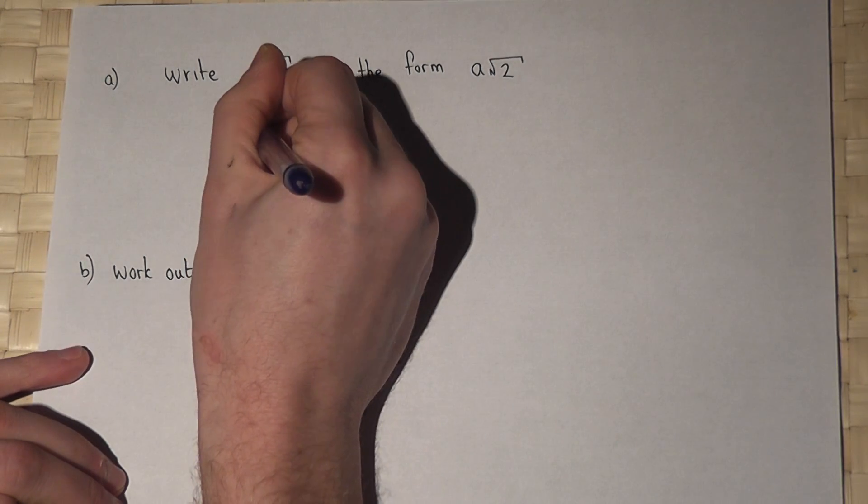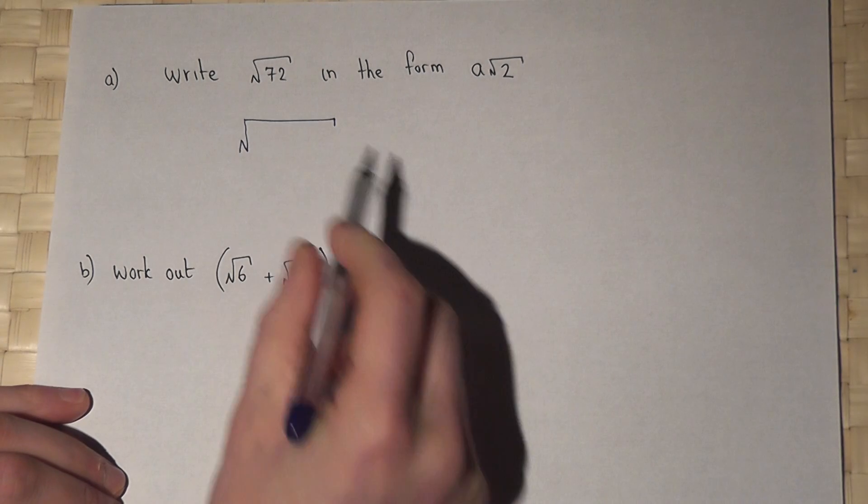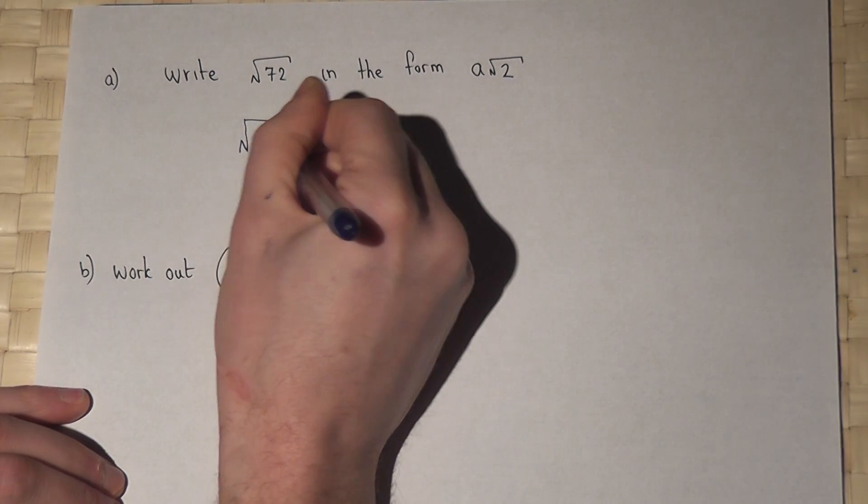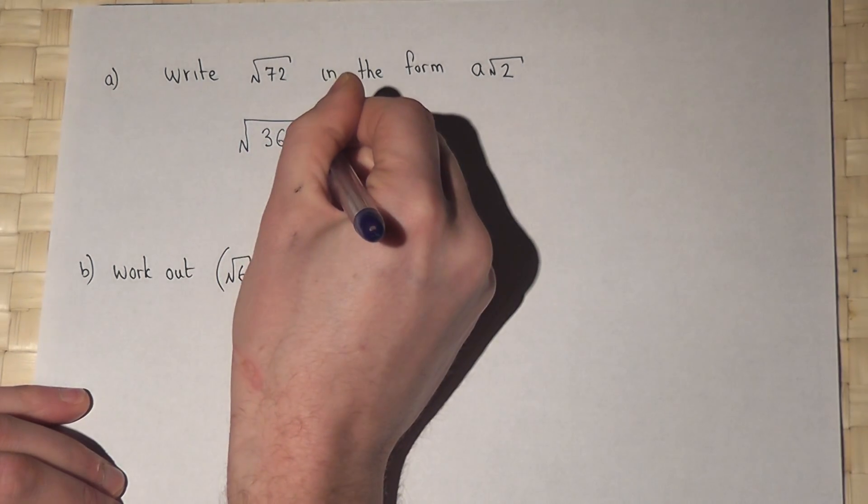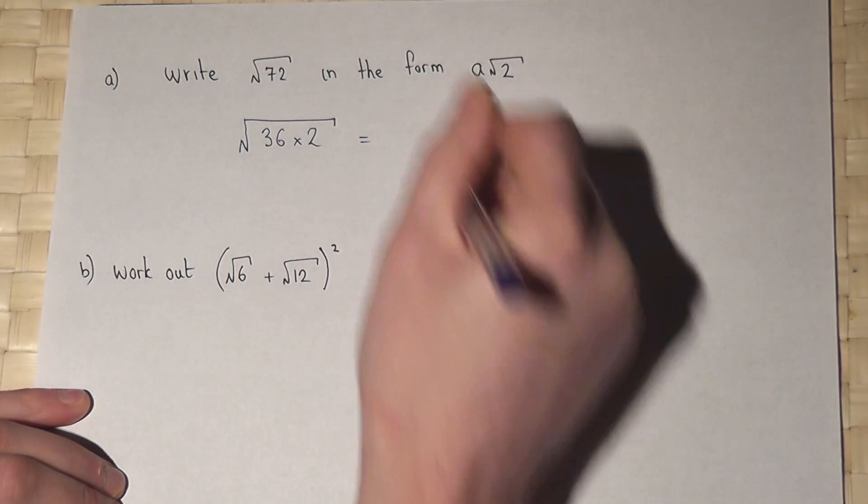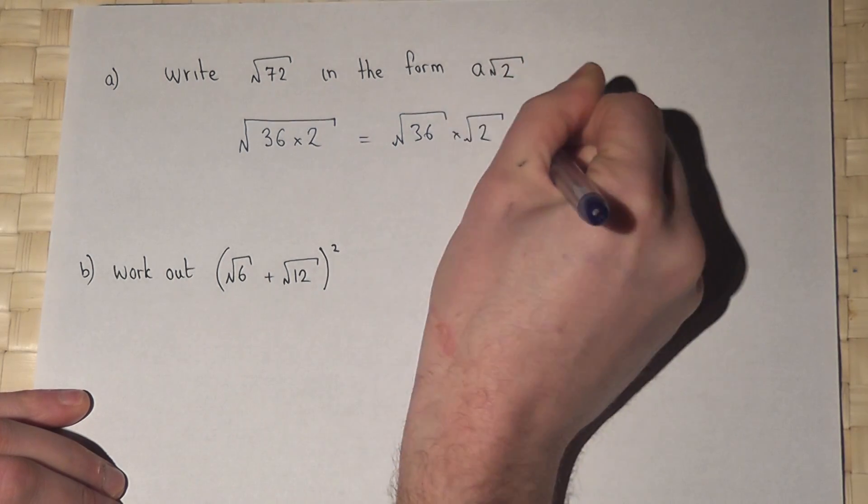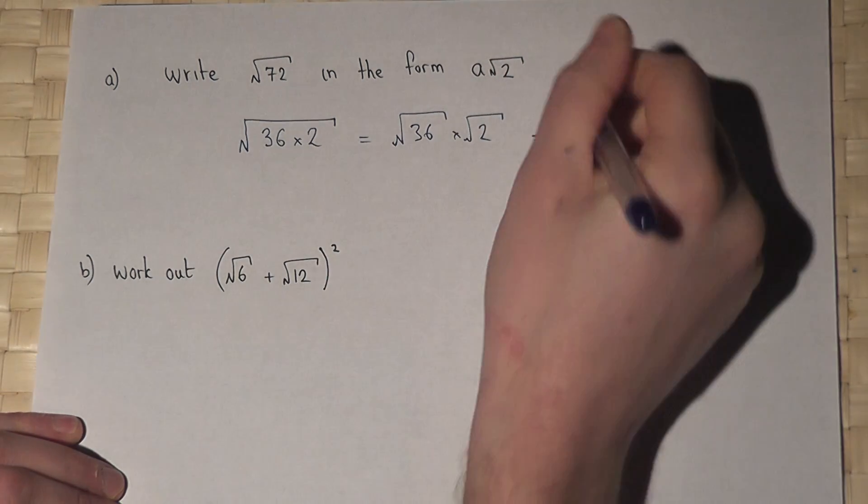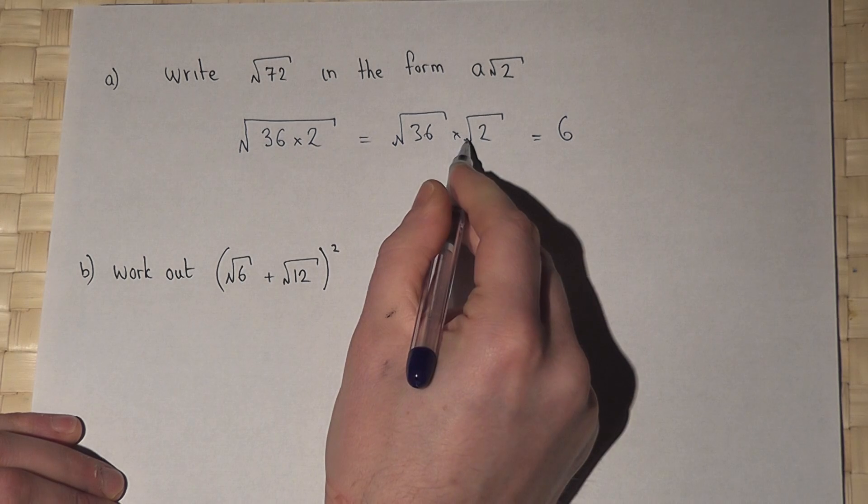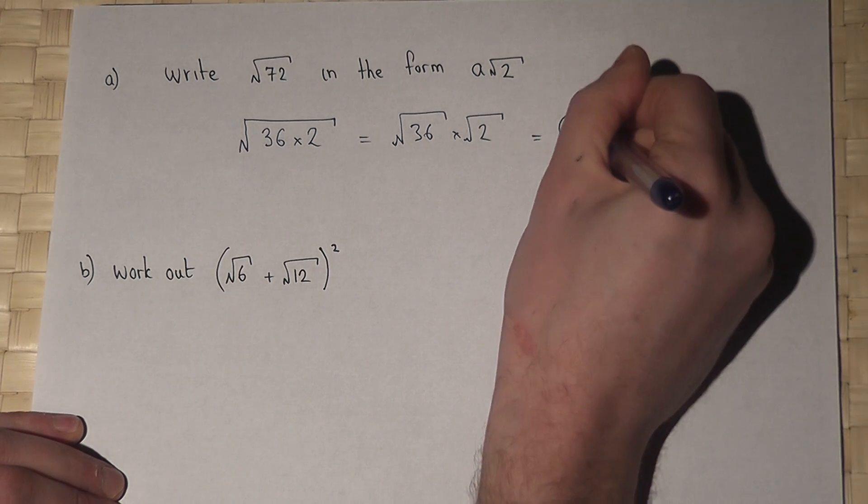We know that the largest square factor of 72 is 36. It's 36 times by 2. So if I square root both of those factors separately, then root 36 just equals 6, and this is left as root 2.